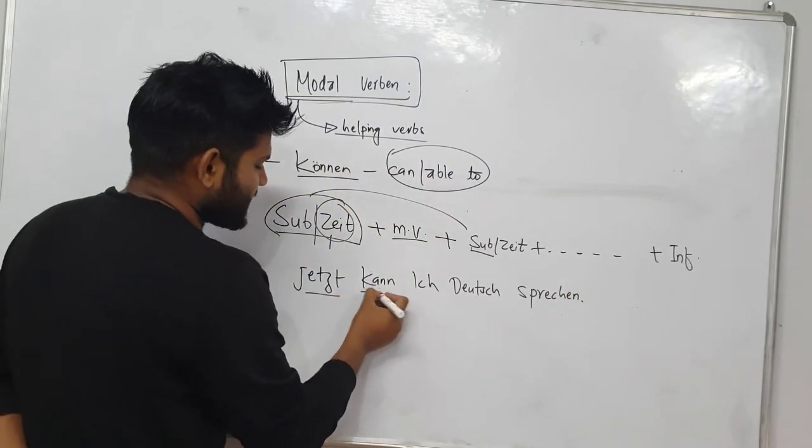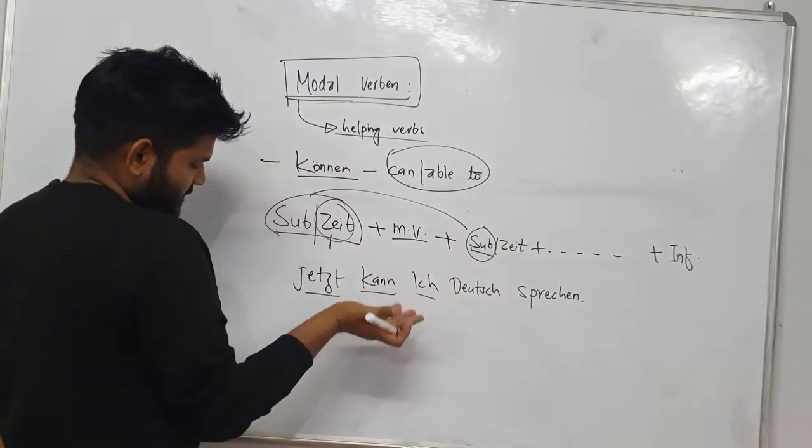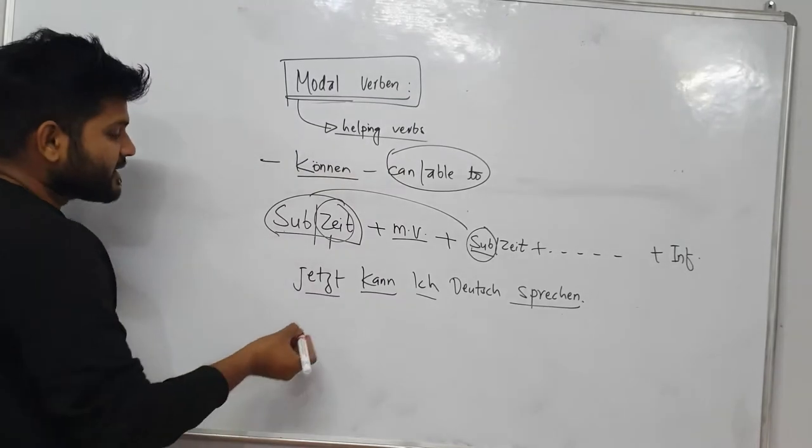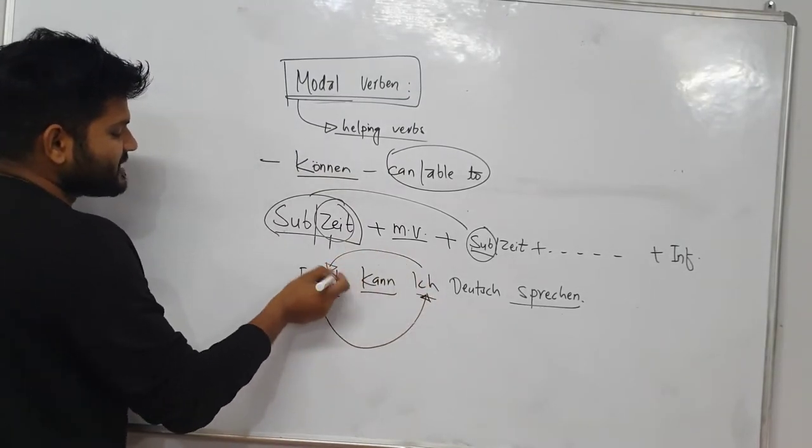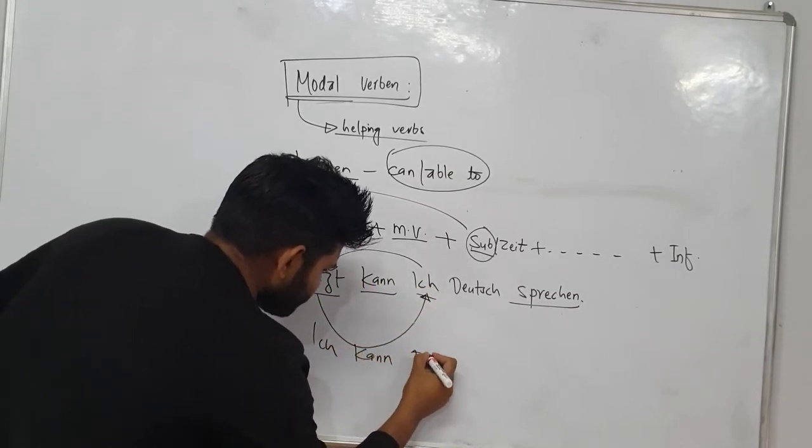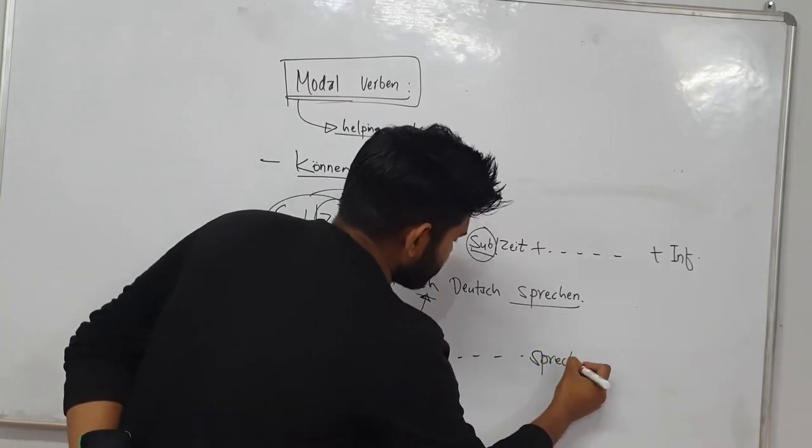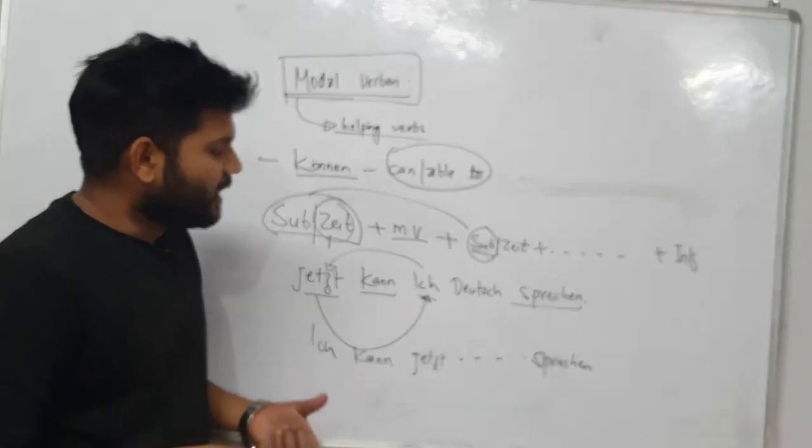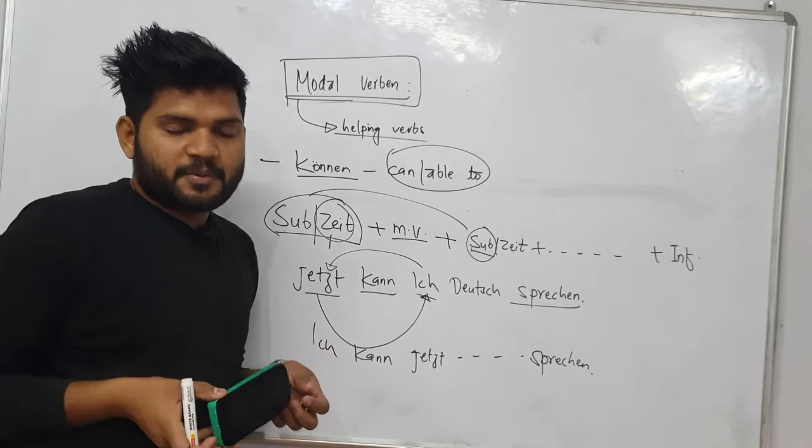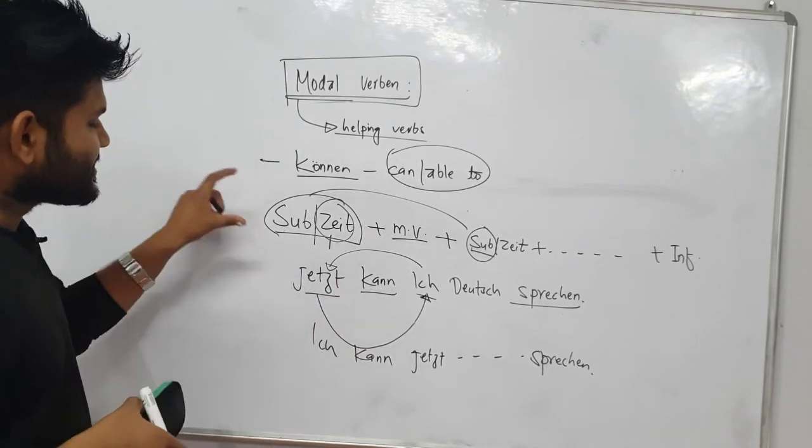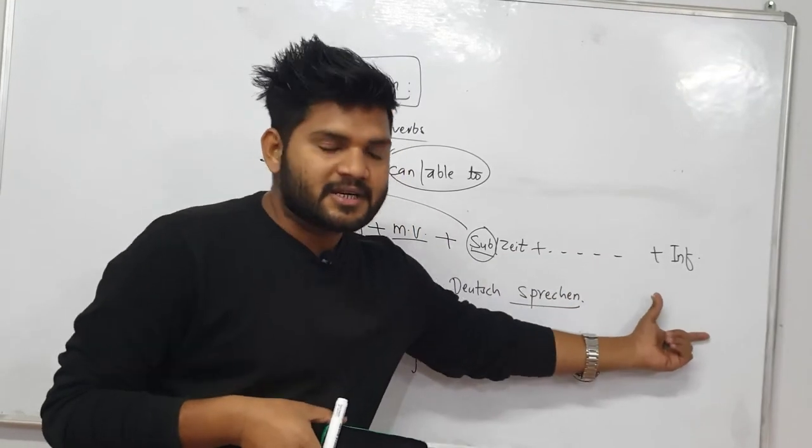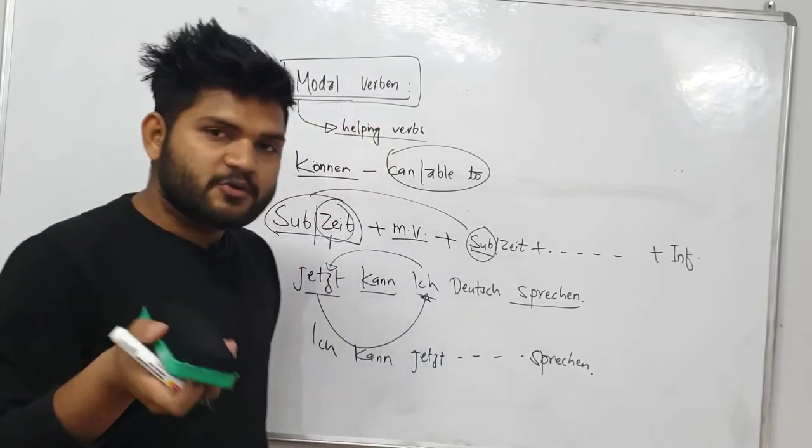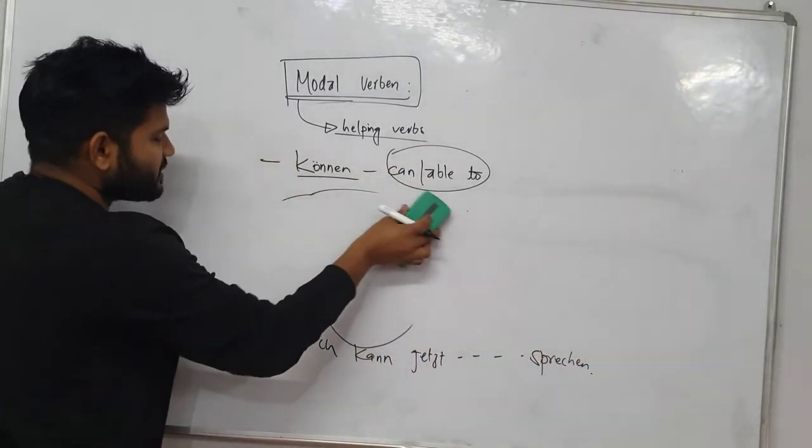Suppose if I say anything like I can speak German now, I can say simply jetzt kann ich Deutsch sprechen, right? Now you see, I am starting with the time, so second position we have modal verb, and on the third we have placed the subject, and at the end we are placing the infinitive form, that is the major verb. Now you may exchange the position or you can interchange the positions of subject as well as time. You can start with ich kann jetzt Deutsch sprechen, right? This is the very basic pattern to use any modal verb.